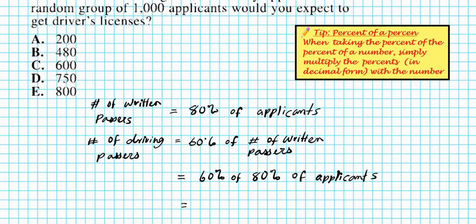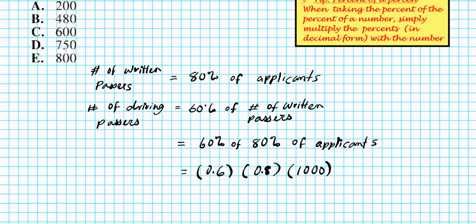So 60% in decimal form is 0.6. Remember, you just move the decimal points two places to the left. Of means you multiply. So we have 0.6 times 80% is 0.8. You move your decimal point to the left twice. Times total number of applicants. In this case, we have 1,000. So what we're doing here is basically multiplying both percentages with the actual number.